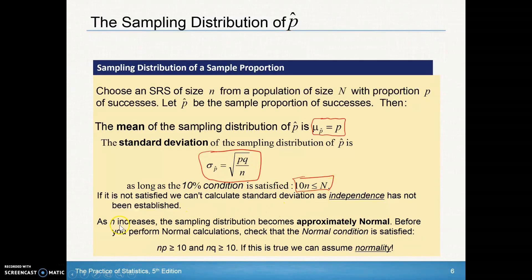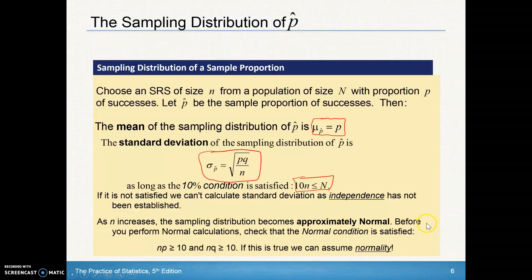Before performing normal calculations, check that the normal condition is satisfied. The distribution only approaches normal when n times p and n times q are both greater than or equal to 10. If that condition holds, we can assume normality and use the normal distribution to calculate probabilities. If not, we can't do that because normality hasn't been established.